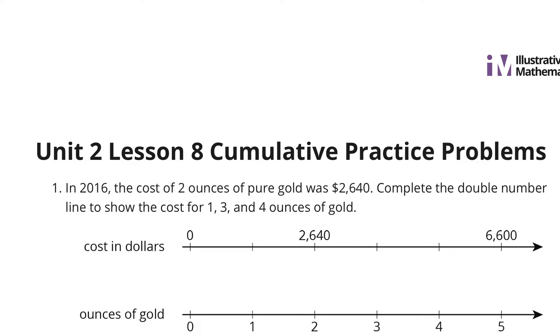In question 1, in 2016, the cost of 2 ounces of pure gold was $2,640. Complete the double number line to show the cost for 1, 3, and 4 ounces of gold.